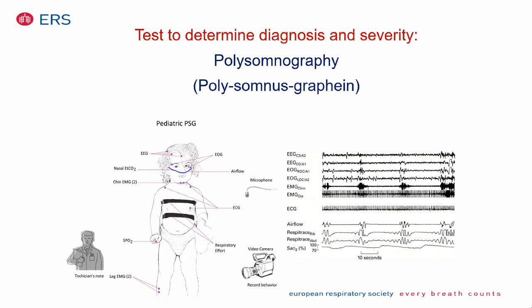The test to determine diagnosis and severity of OSA is polysomnography. During polysomnography we use EEG, EOG, and chin EMG to define sleep states and arousals, giving a measure of sleep fragmentation. We look at airflow for apneas and use chest and abdominal belts to assess respiratory effort, allowing us to determine whether an apnea is obstructive or central. Oximetry monitors saturations, and in children it's also recommended to measure nasal end-tidal CO2 or transcutaneous CO2 to define obstructive hypoventilation, with technicians watching the child and video recording.